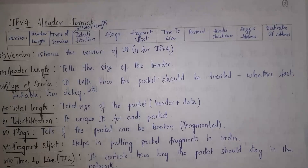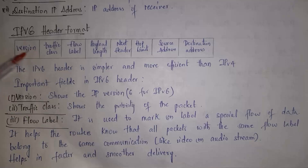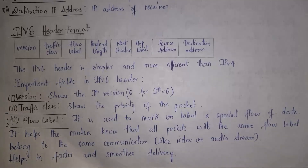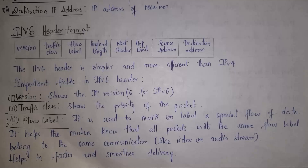Next I will explain the header format of IPv6. The first field is version, which tells the version of IP — in this case version 6. The second field is traffic class, which shows the priority of the packet. If a packet has high priority it needs to be transferred immediately; if it has low priority it is transferred slowly. The next field is flow label — data sent over the network is given a label, for example video data which is important can be given a label and handled based on that label.